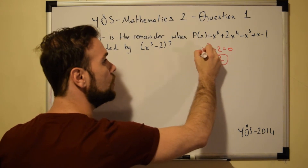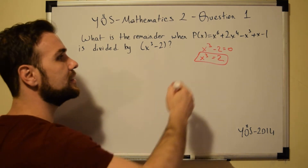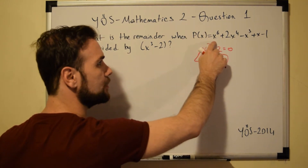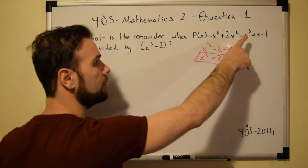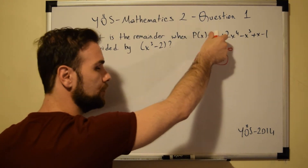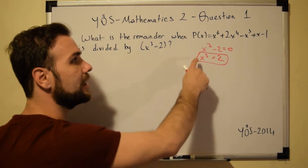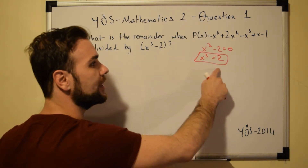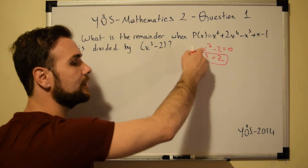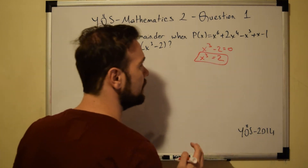Now that we know the value of x to the power of 3, all we have to do is see what are the other ways we can write x to the power of 6 and x to the power of 4. By doing so, we will try to simplify this expression and get to the value using x to the power of 3.